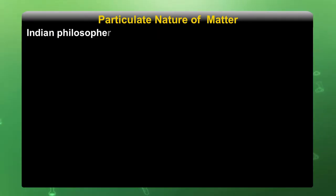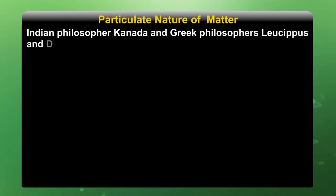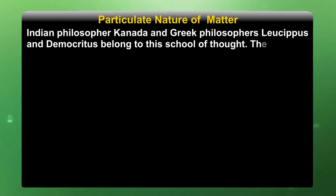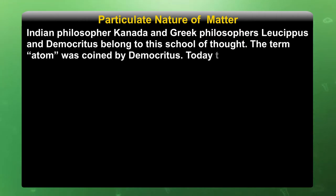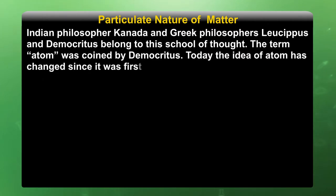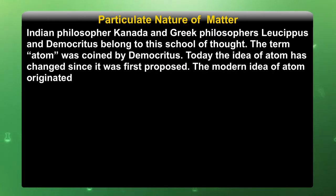Now let us understand the historical background of matter. Indian philosopher Kannard and Greek philosophers Leucippus and Democritus belong to this school of thought. The term 'atom' was coined by Democritus. Today the idea of the atom has changed since it was first proposed. The modern idea of the atom originated with John Dalton in the year 1803.